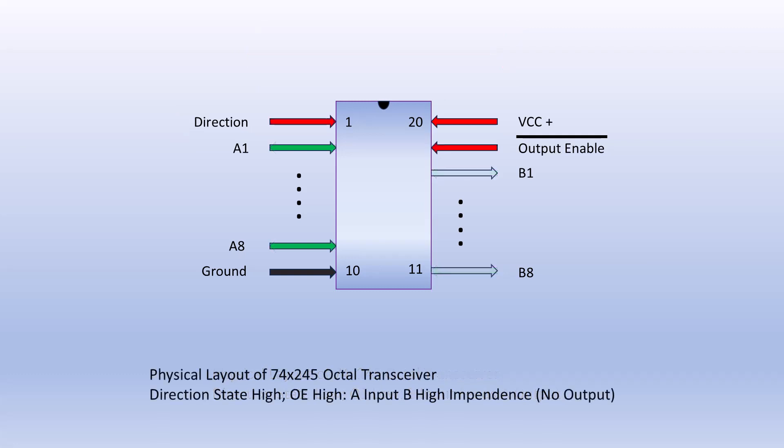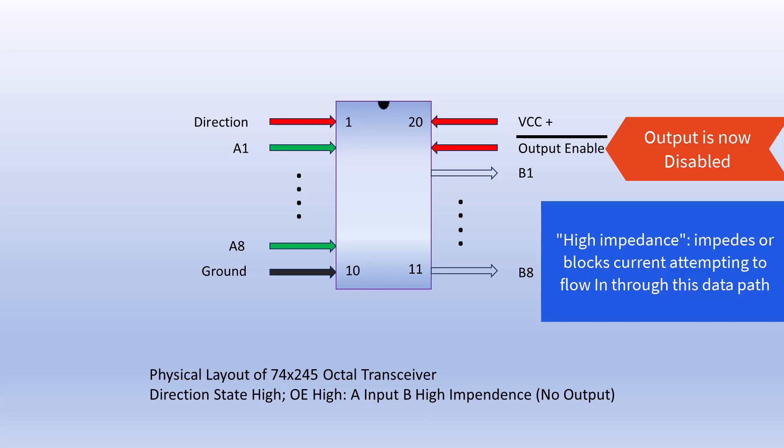Here we notice that the direction pin is set high and the output enabled pin is set high, the disabled state. This causes the output pins to go into a high impedance state and will not allow traffic in either direction.